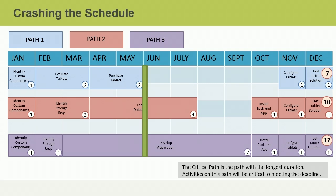The number of resources you add can be determined using parametric estimating. The more resources you add, the shorter the activity duration will be, at least until the point of diminishing returns. At some point, you will achieve the most efficient staffing level for the activity. Any more resources will not result in a shorter duration. Once you estimate the appropriate number of resources to add to this activity, you can determine the cost and update the schedule baseline and budget baseline accordingly.